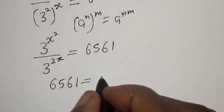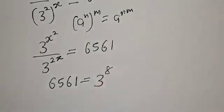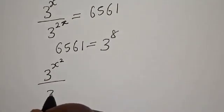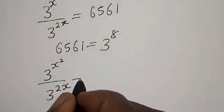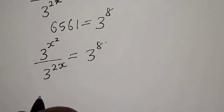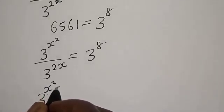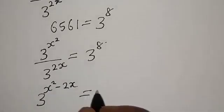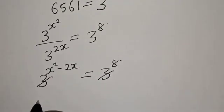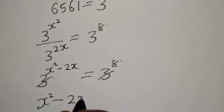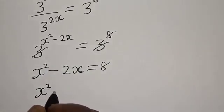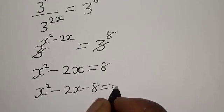6561 equals 3 raised to power 8. So we have 3 raised to power s squared over 3 raised to power 2s equal to 3 raised to power 8. Then our left side becomes 3 raised to power s squared minus 2s equal to 3 raised to power 8.